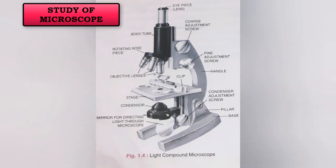Next is the stage. It is used to hold the object on the slide, and the stage clips are used to hold the slide in place. Next is the condenser. It is used to focus the light on the specimen under observation. The last part is the base. It provides basal support for the microscope, and the mirror is used to reflect light on the object and help us see the specimen clearly.